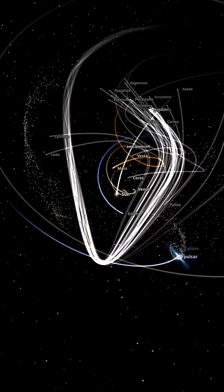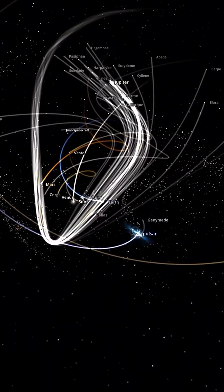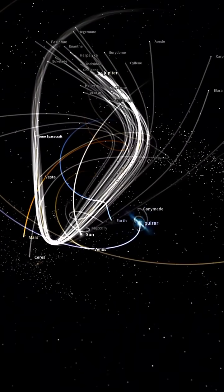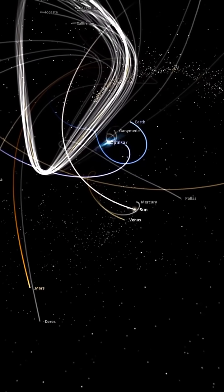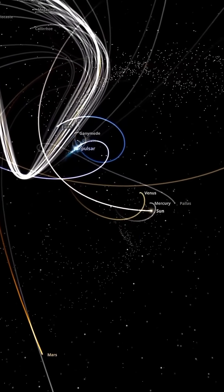The other planets experience similar chaos. Their orbits become erratic, increasing the risk of collisions. The asteroid belt turns into a danger zone, with asteroids knocked out of place and sent hurtling unpredictably through space.